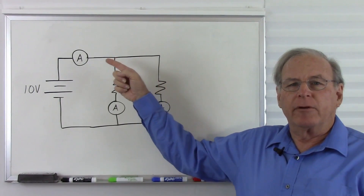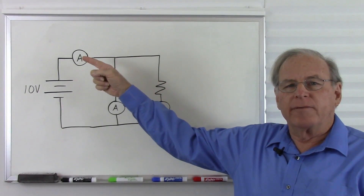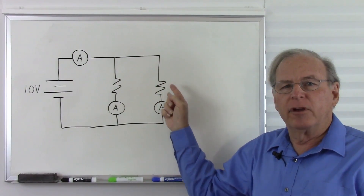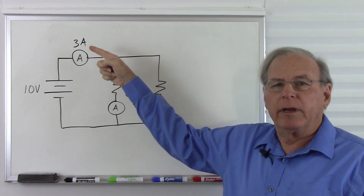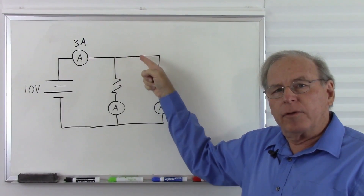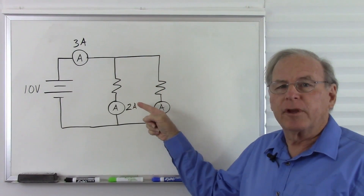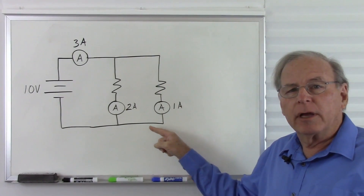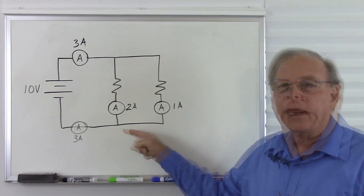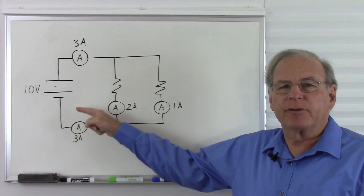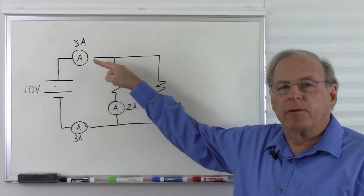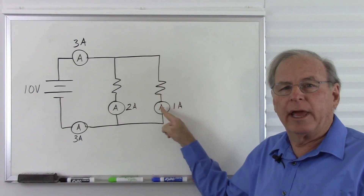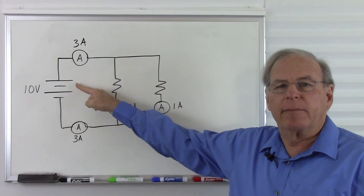If I add current meters to the circuit, we will see that whatever current I have flowing from the battery will split between the two branches. So for example, I have three amps flowing from the battery. Through this leg I have two amps, and through this leg I have one amp. Those two currents come back together at this node, and flowing back into the battery I have my three amps again. So my three amps split up into two amps and one amp, and then back into three amps to go back to the battery.